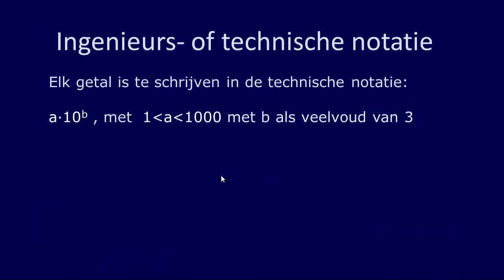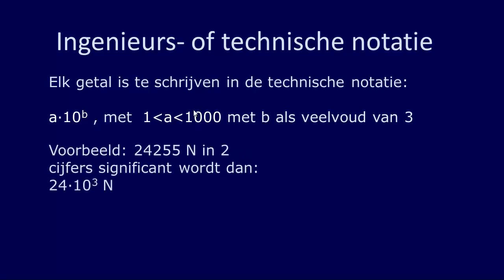Een tweede notatie die je nog wel eens tegenkomt is de ingenieurs-, oftewel technische notatie. Deze lijkt heel erg op de wetenschappelijke notatie. Alleen, elk getal schrijf je nu op in de vorm A maal 10 tot de macht B, waarbij A tussen de 1 en de 1000 ligt, en B telkens een veelvoud is van 3. Een voorbeeldje: stel ik heb een kracht van 24.255 newton en die wil ik in twee cijfers significant opschrijven. Dan kun je dat opschrijven als 24 maal 10 tot de macht 3 newton, want 24 ligt tussen de 1 en de 1000 en 3 is een veelvoud van 3.